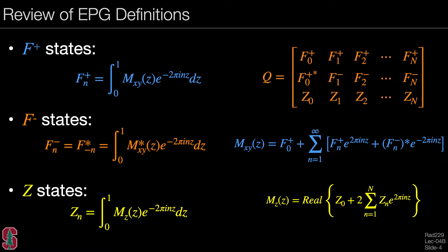We can represent the EPG coefficients in this matrix Q, where the top row are the F plus coefficients, the second row are the F minus coefficients, and the bottom row are the longitudinal or Z coefficients. The integrals for the reverse transformation from EPG back to the magnetization domain are shown here as well.